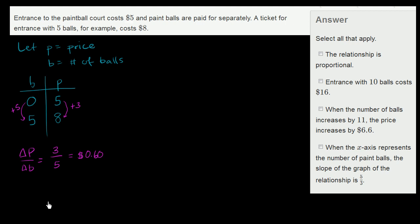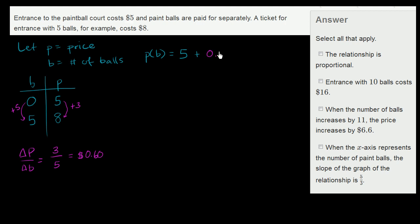So let's think about constructing an equation that represents how much we will pay as a function of balls. We could write it in function notation: price as a function of balls is going to be equal to — well, you're going to start off paying $5 just for getting into the place, and then you're going to pay more depending on the number of balls you get — $0.60 per ball. When you got five balls, you paid $3, and $3 for five balls is the same thing as $0.60 per ball. So P(B) = 5 + 0.60B. This defines price as a function of balls.